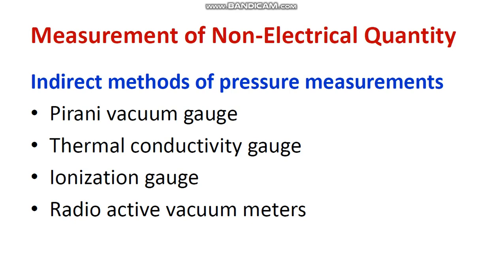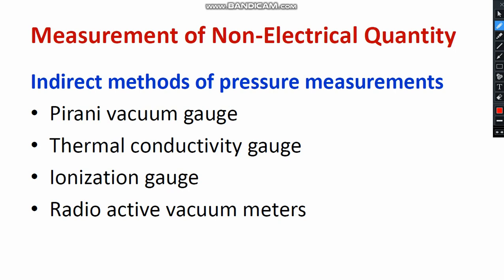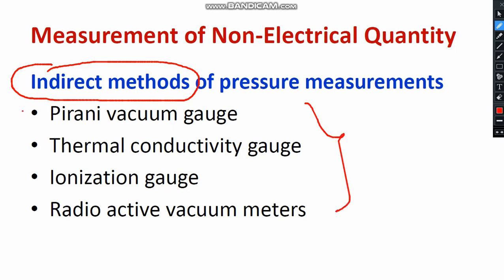I would like to welcome you to the playlist of sensors and transducers. In this video, I will be discussing the indirect methods of pressure measurement. We have already studied the direct method of pressure measurement. Today we are going to discuss the indirect method. The major methods are: Pirani vacuum gauge, thermal conductivity gauge, ionization gauge, and radioactive vacuum meters.